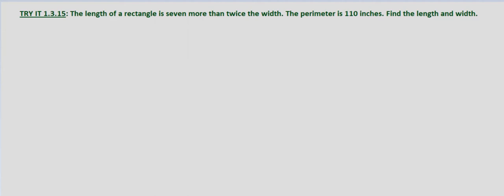We'll go ahead and we'll define a couple things first before we draw the picture. So let W equal the width. And then what's the length in terms of the width? We're given that the length of a rectangle is 7 more than twice the width. So 2W plus 7.